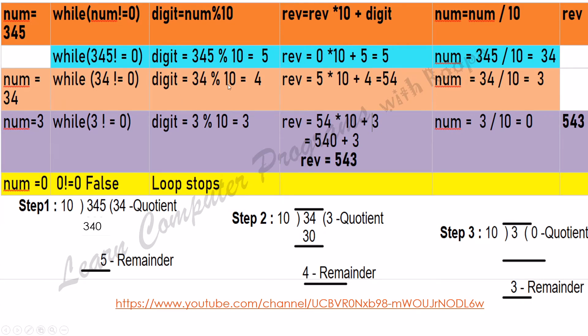So digit equals 4, and reverse is the earlier value, 5. It is 5, now 5 times 10 plus 4, which will give me 54. So already I have got these two digits.